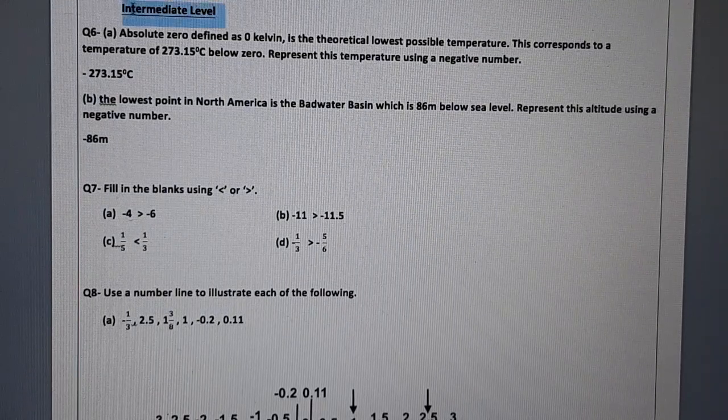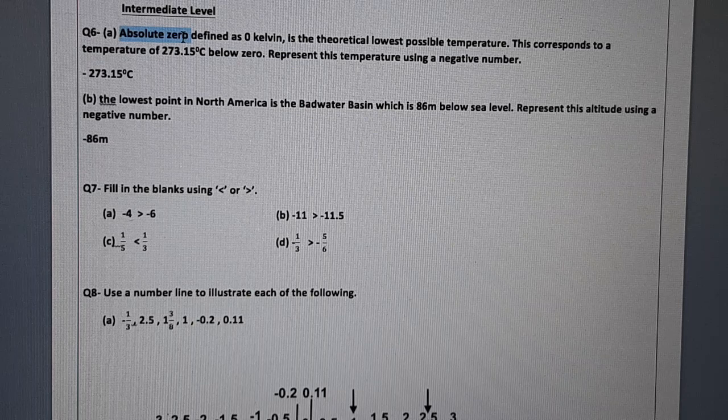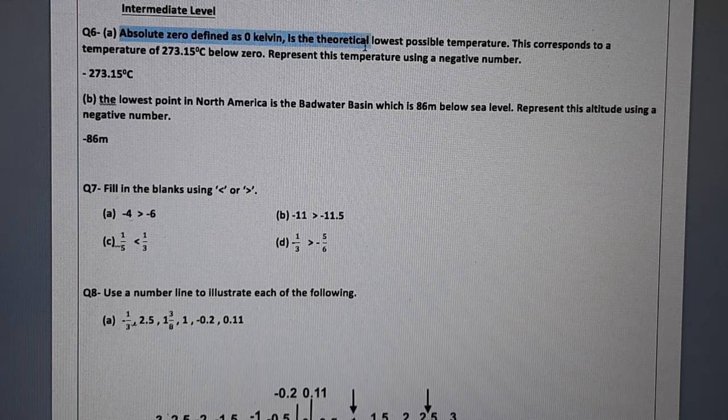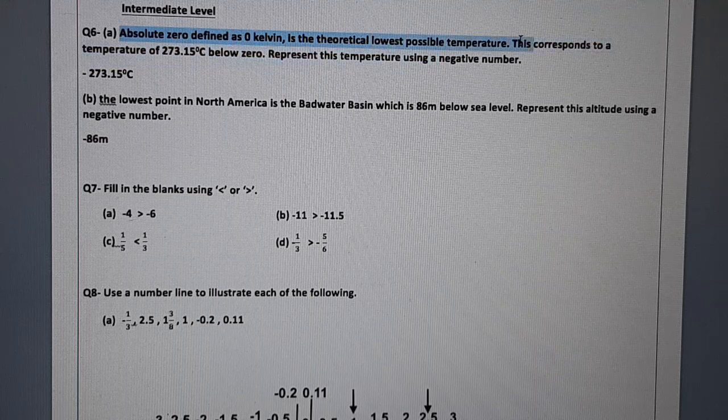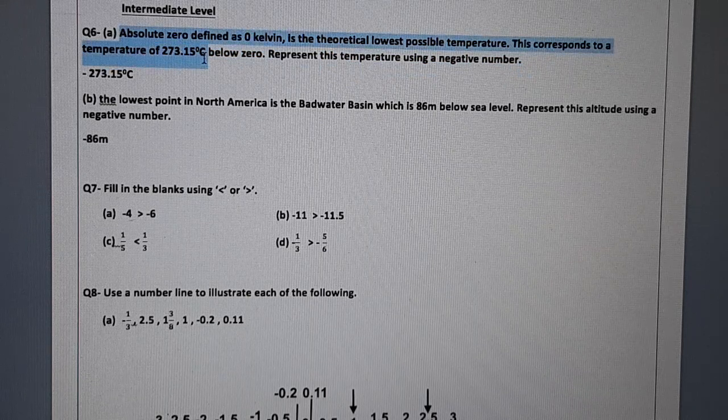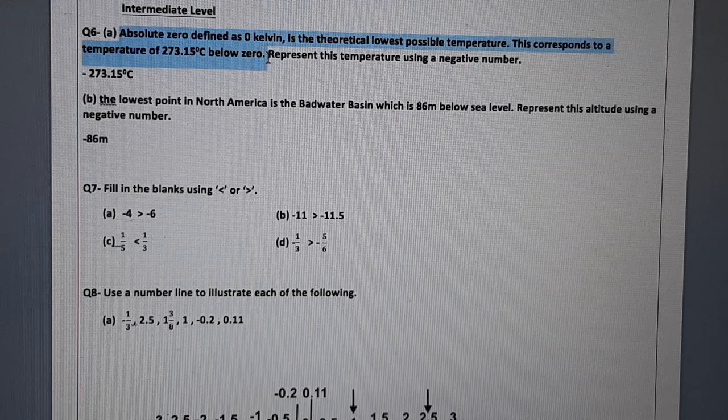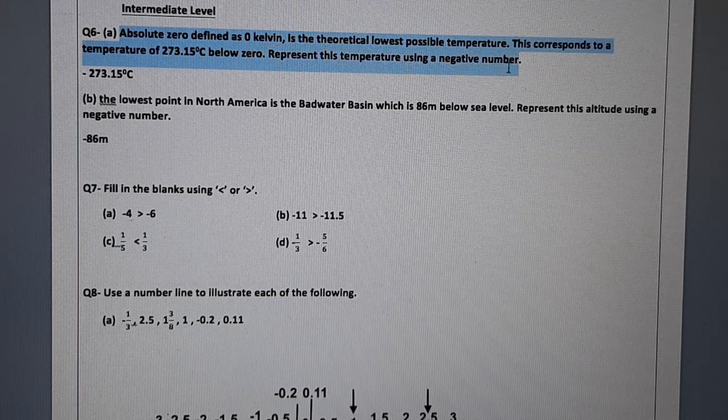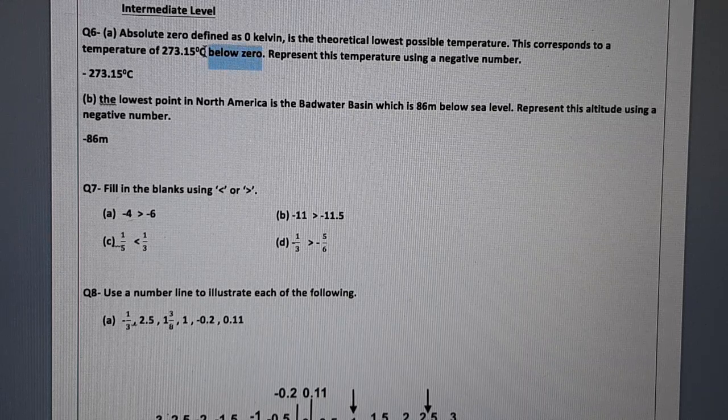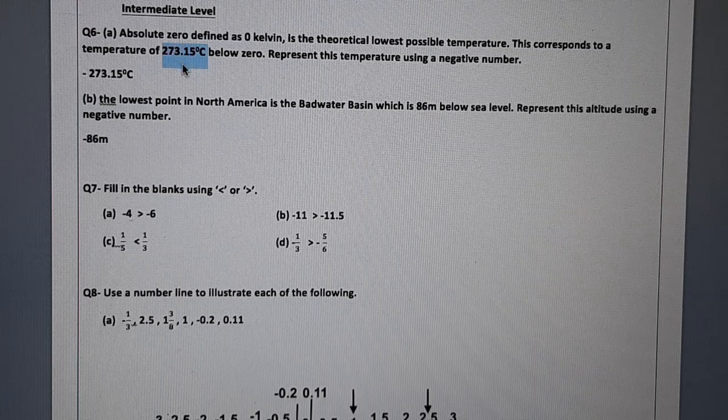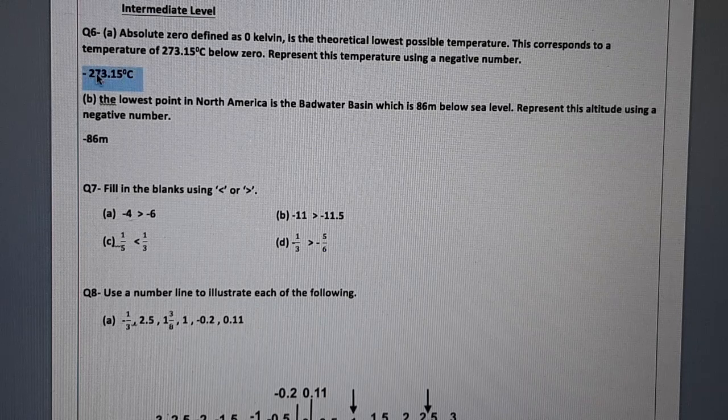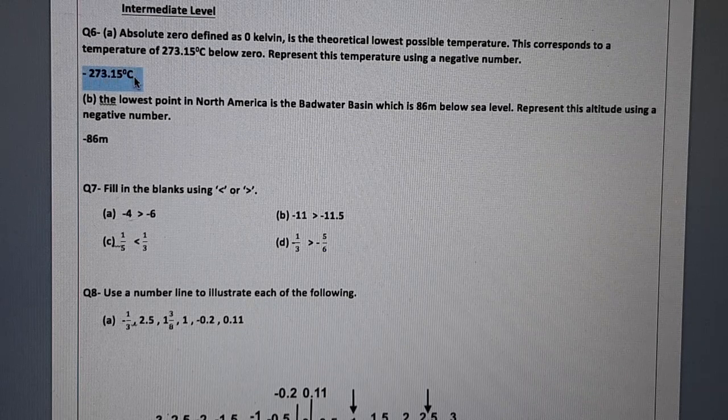Now related to intermediate questions, question number 6, part A. Absolute 0, defined as 0 Kelvin, is the theoretical lowest possible temperature. This corresponds to a temperature of 273.15 degrees centigrade below 0. Represent this temperature using a negative number. Now this is below 0, and how much below 0? It is 273.15 degrees centigrade below. So for that we use negative number, that is minus 273.15 degrees centigrade.